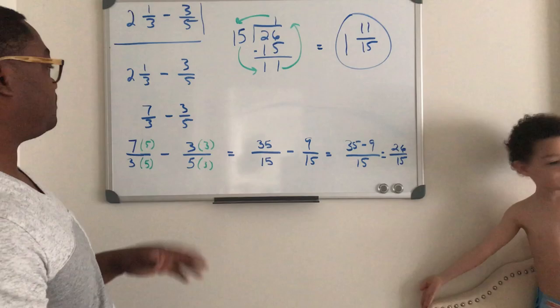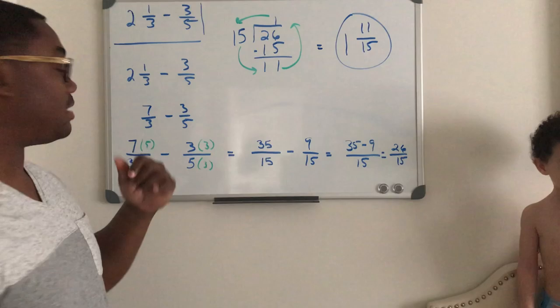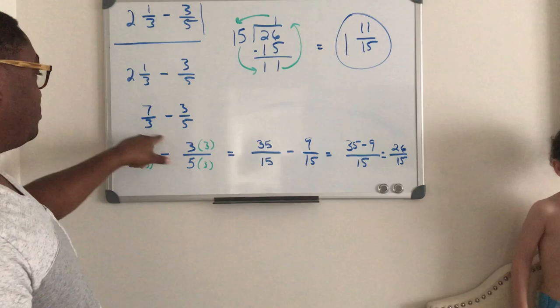So now we have 7 thirds minus 3 fifths, and we have a similar denominator as the last problem.